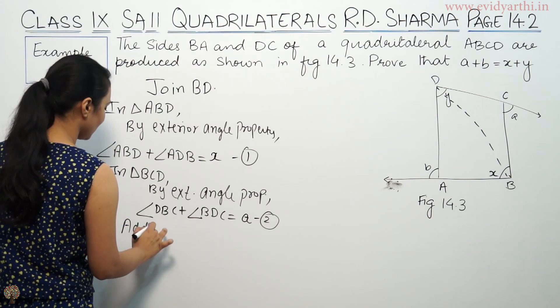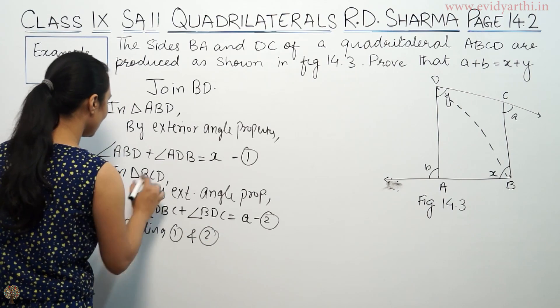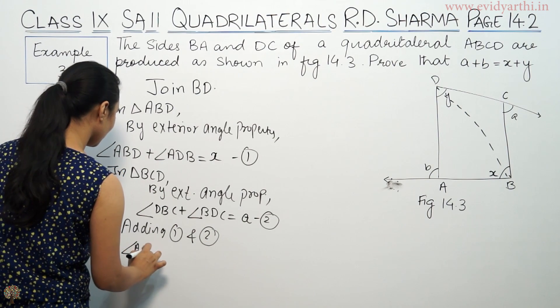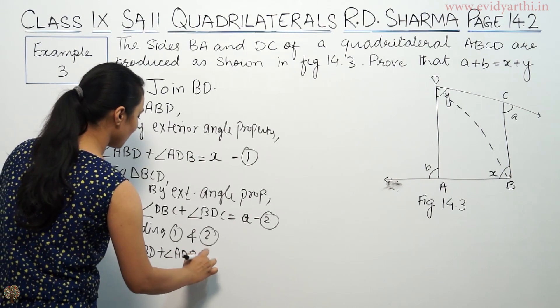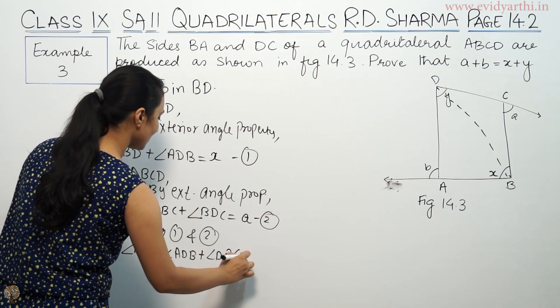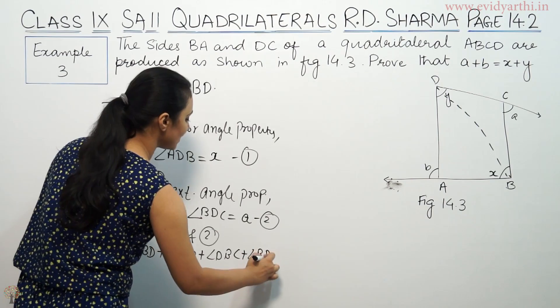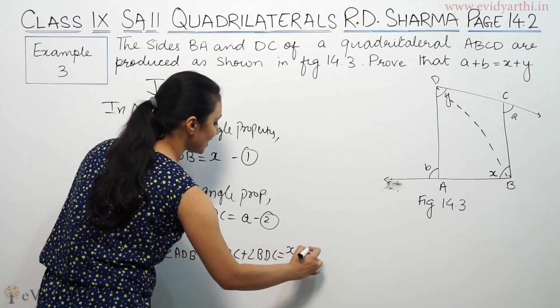Adding first and second, angle ABD plus ADB plus angle BDC plus DBC is equal to X plus Y.